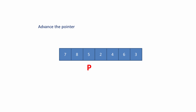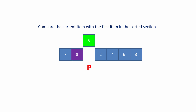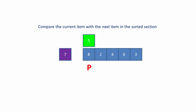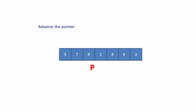Advance the pointer. Remember the pointer separates the sorted section on the left from the unsorted section on the right. Select the first item in the unsorted section — this is the new current item. Compare the current item with the first item in the sorted section. Move the sorted item if it's bigger than the current item. Again compare the current item with the next item in the sorted section. Move the sorted item if it's bigger than the current item and insert the current item into the correct position. Advance the pointer — remember the pointer separates the sorted section of the list on the left from the unsorted section.